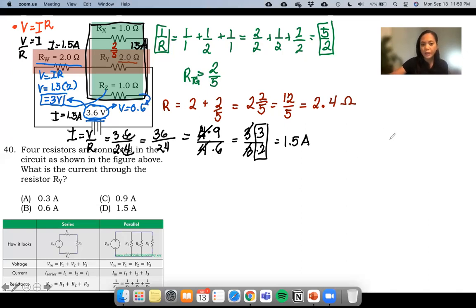So I will just write it again. We have here a circuit with 1.0 ohms, a circuit with 2 ohms, and with another 1.0 ohms, 2.0 ohms.